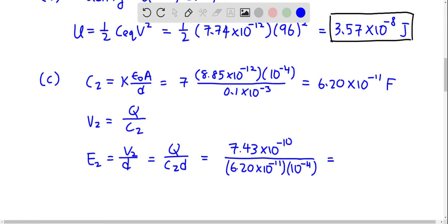Just use your calculator and you get 1.2 times 10 to the 5 volts per meter. This is the answer for part C, and that's all for this question.